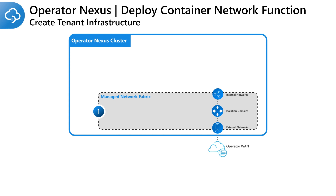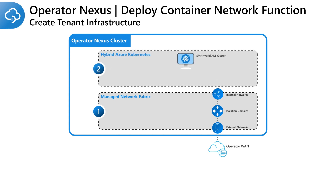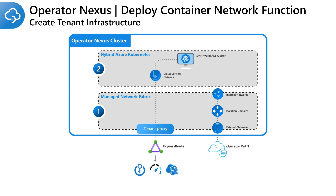Next, we will create a hybrid Azure Kubernetes service cluster that will be used to run the Azure Operator 5G Core SMF. We will attach a cloud services network to the hybrid AKS cluster that will be used by the SMF application to communicate with Azure services, such as Azure Container Registry and Azure Monitor. We will also add a default CNI network to the cluster using the network fabric layer 3 isolation domain that we previously created. The default CNI network enables BGP communication for the SMF container network function with other network functions in the Operator Nexus cluster.